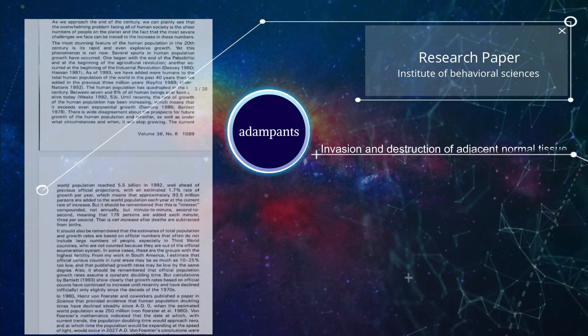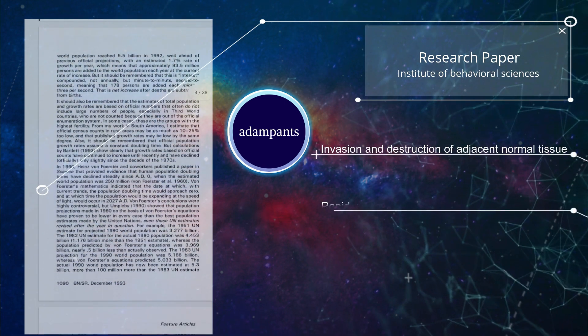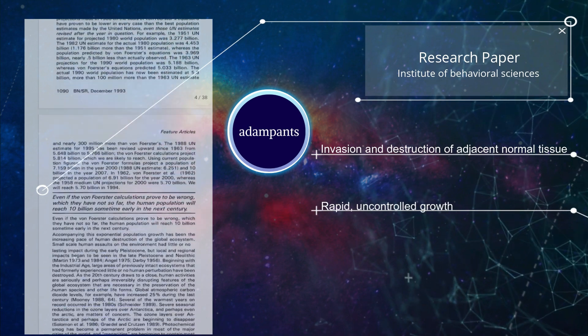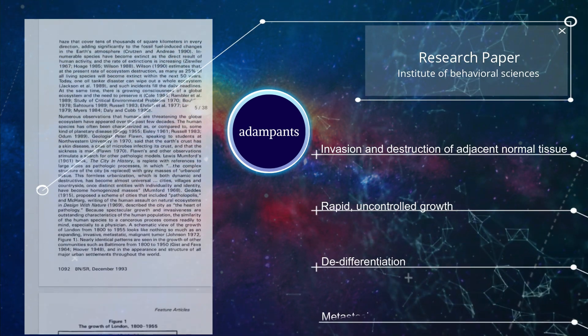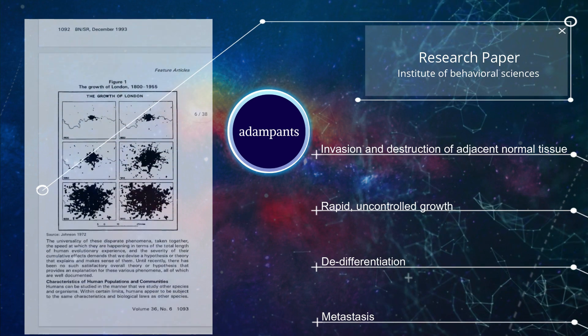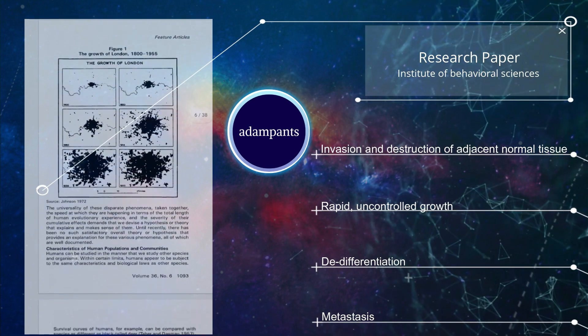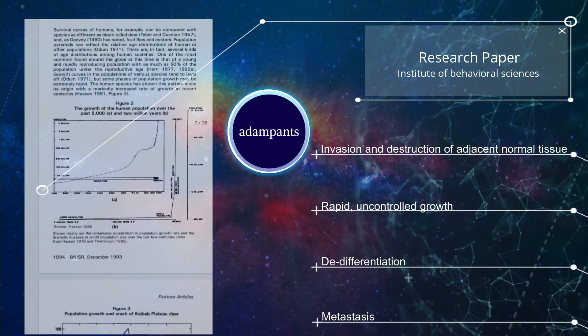These four characteristics are: invasion and destruction of adjacent normal tissues, rapid uncontrolled growth, de-differentiation, and metastasis — all of which demonstrate a malignant, eco-pathological process.